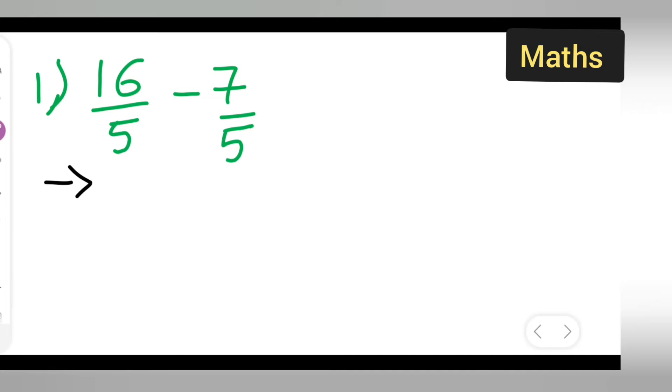So here what I am going to do is first write down 16 upon 5 minus 7 upon 5 as it is.